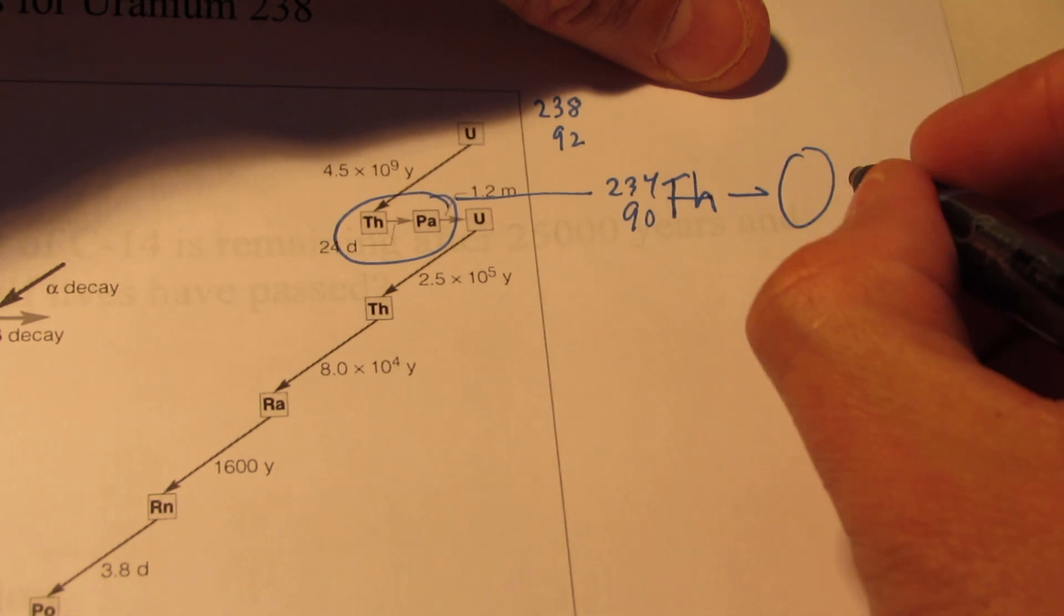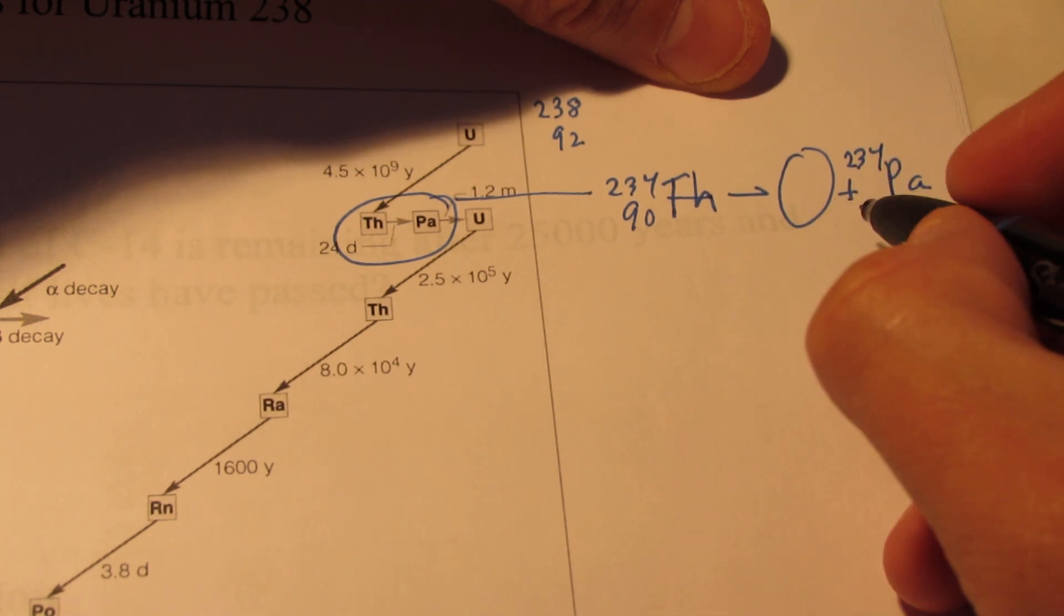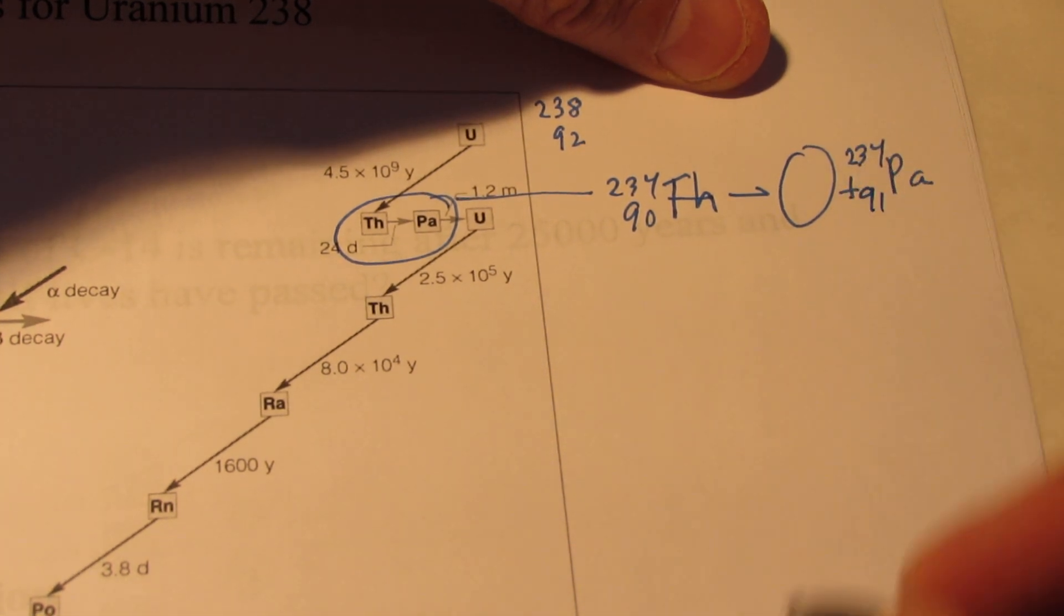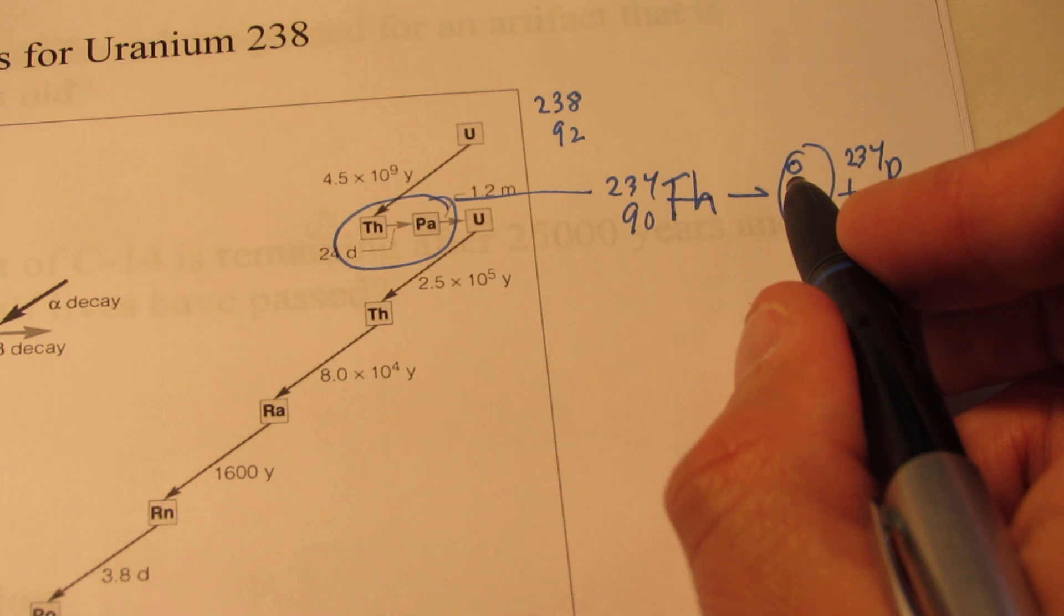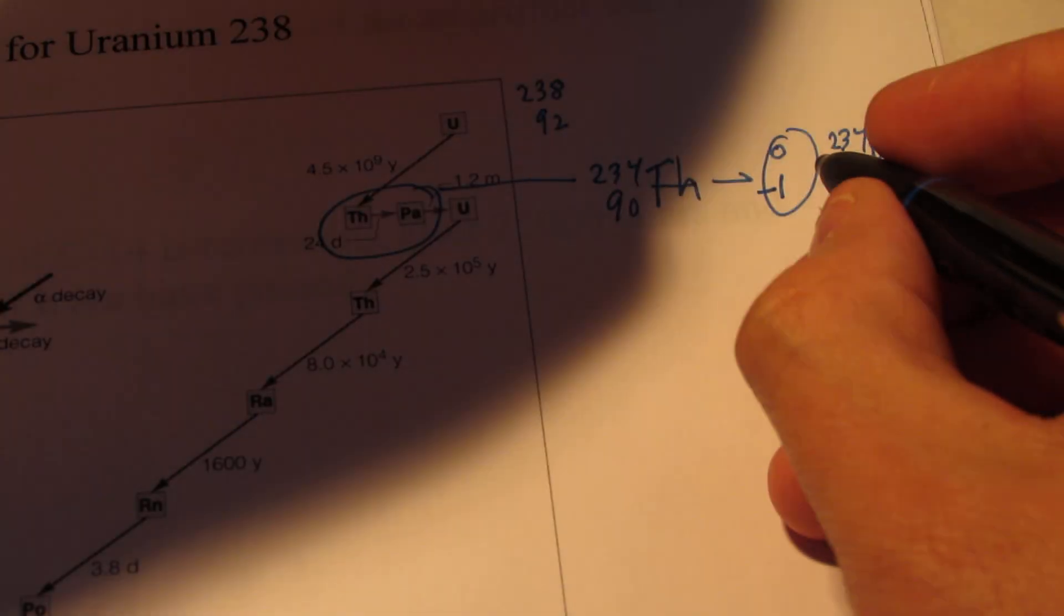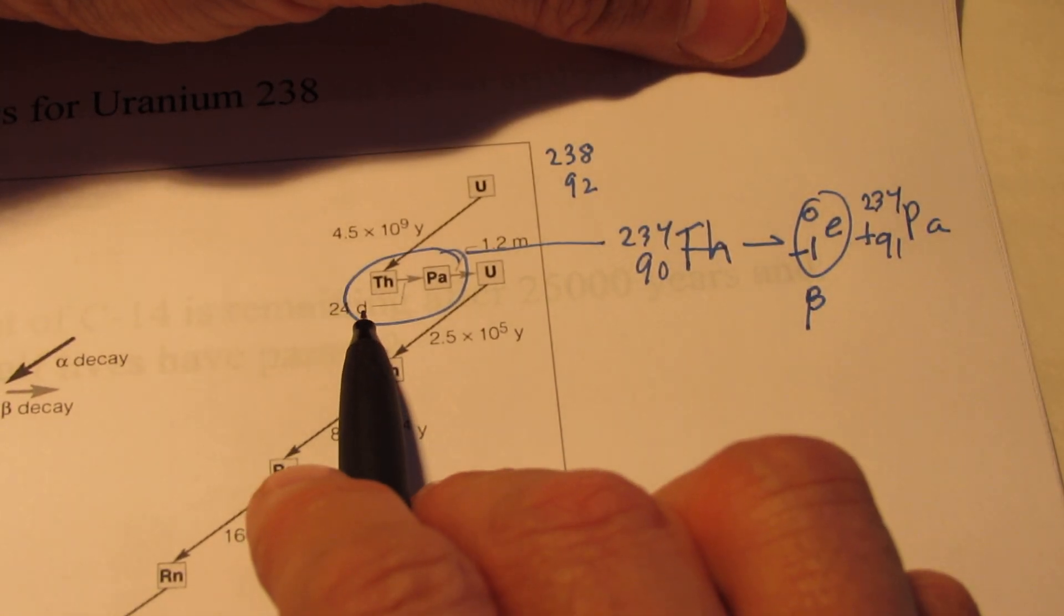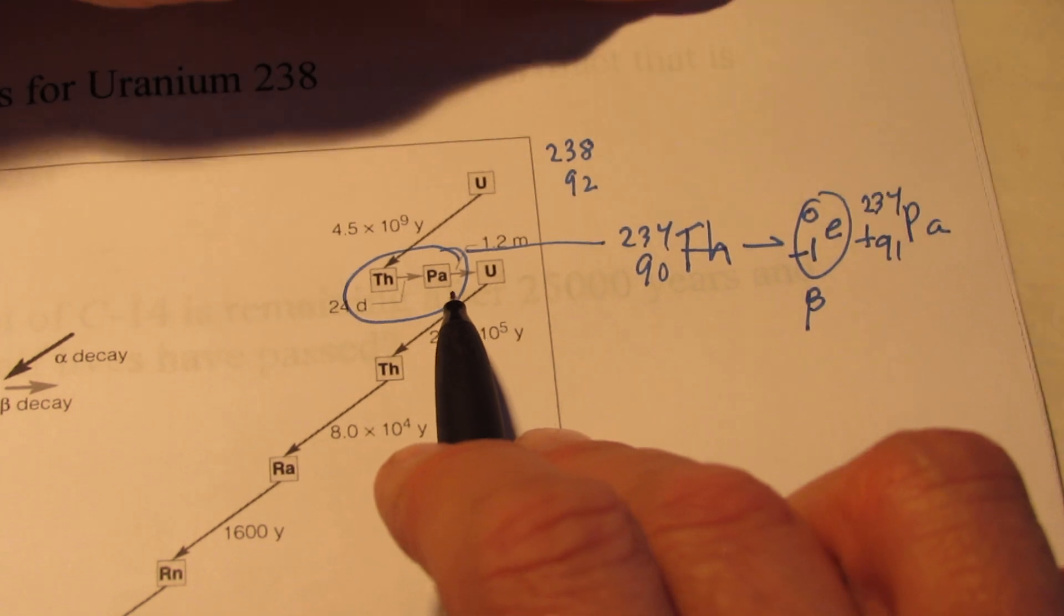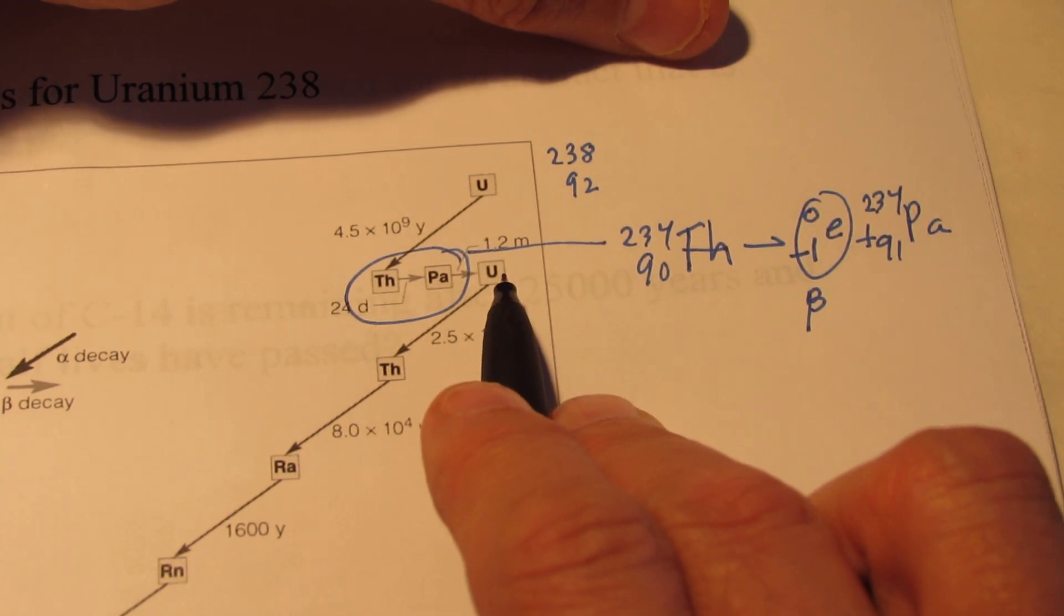What type of particle does it give off to turn into PA with the mass number of 234 still? And its atomic number actually goes up by 1, so its atomic number is 91. What type of decay process would that be? The mass number stays the same, so the mass of this particle is 0. And what plus 91 equals 90? It's negative 1. What type of emission is that? If you said beta emission, you are correct. Thorium-234 emits a beta particle becoming protactinium-234. Then protactinium gives off another beta particle, which takes 1.2 minutes, and it becomes uranium-234.